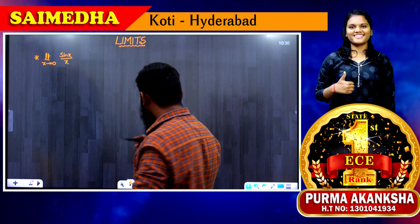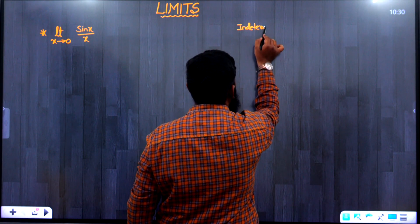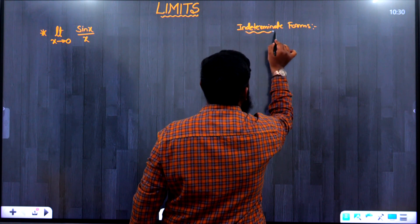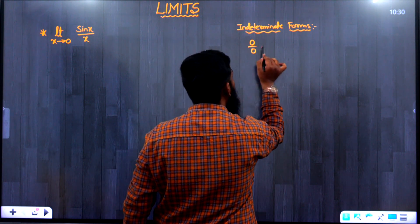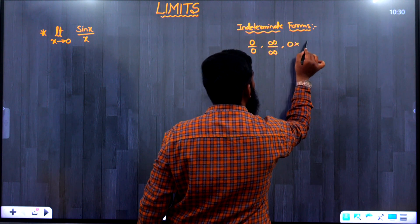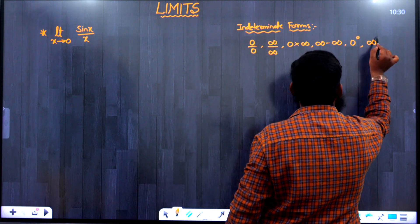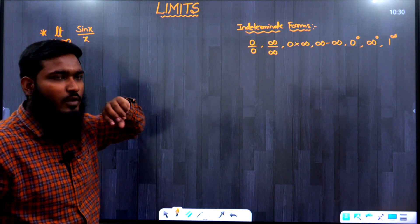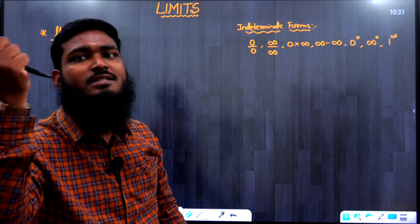Whenever we apply the limit and get an indeterminate form, we need to make some changes and apply another method. There are seven indeterminate forms: 0/0, ∞/∞, 0×∞, ∞−∞, 0⁰, ∞⁰, and 1^∞.